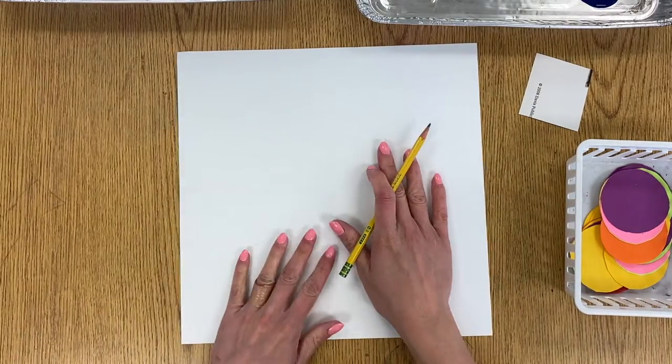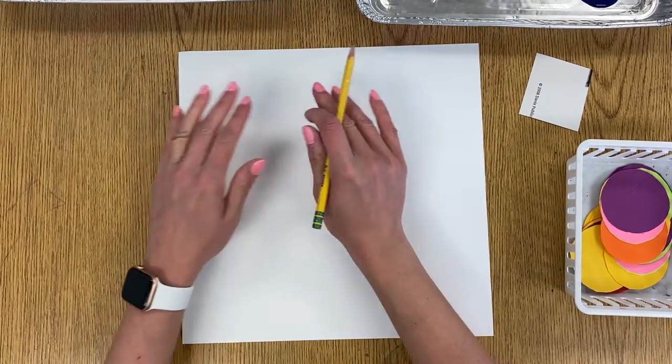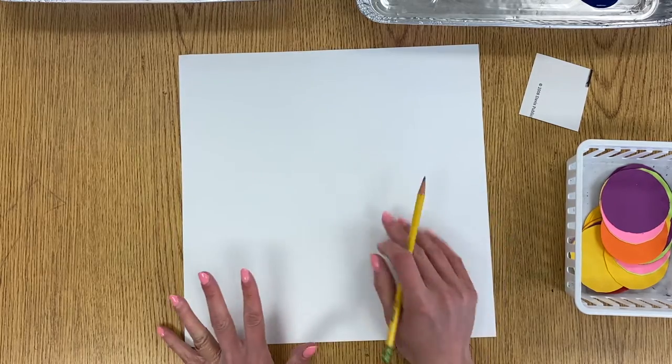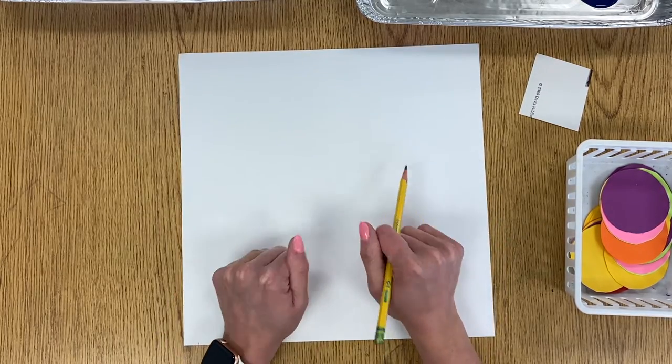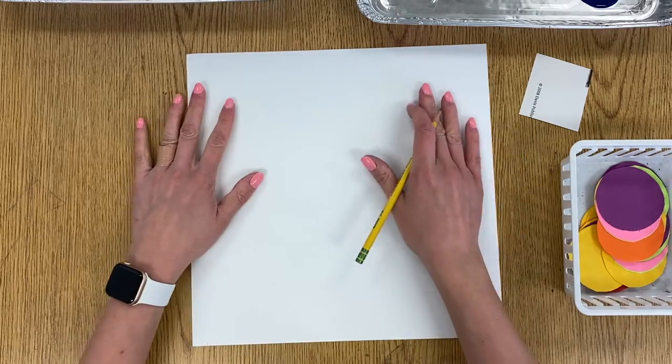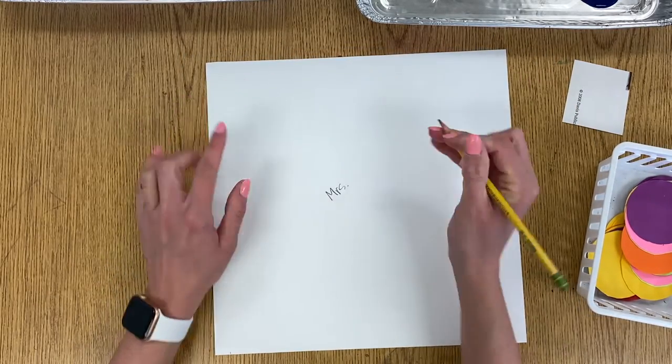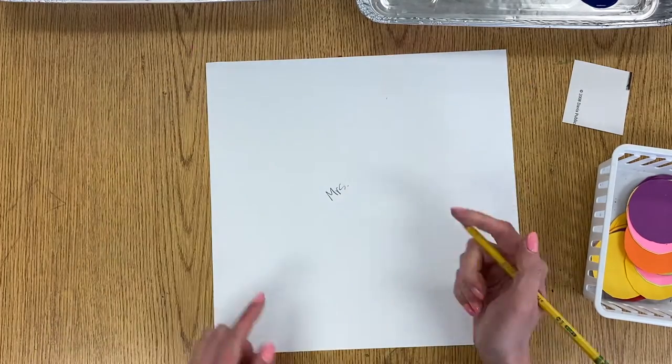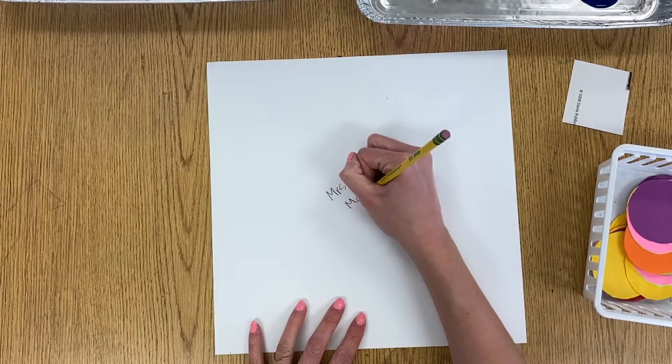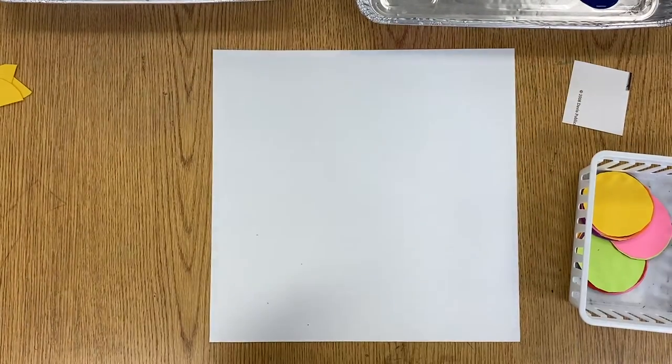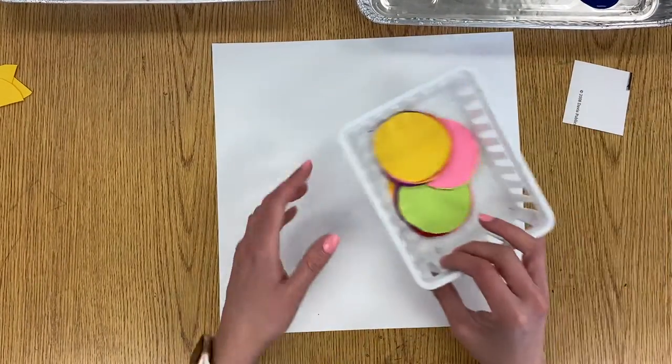Alright first graders, today we are going to start your background for our mosaic project that is inspired by the artist Alma Thomas. The first thing you are going to do is write your name and class code on the back of a square white piece of paper.